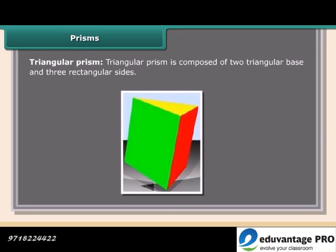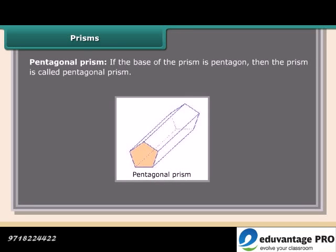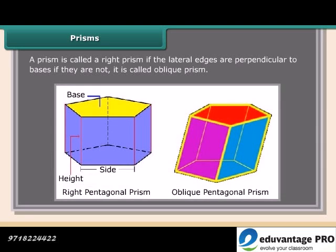A triangular prism is composed of two triangular bases and three rectangular sides. A pentagonal prism has a pentagon as its base. A prism is called a right prism if the lateral edges are perpendicular to the bases; if they are not perpendicular, it is called an oblique prism.